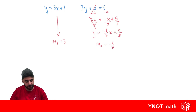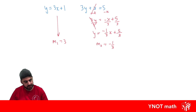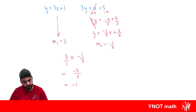From our earlier work we know they're going to be perpendicular, but let's double check. They're not parallel because the gradients aren't equal. And if they're going to be perpendicular, when we multiply them together we should get minus 1. So 3 times minus a third — think of 3 as 3 over 1. Times the numerators: 3 times minus 1 is minus 3; 1 times 3 is 3. And minus 3 divided by 3 is minus 1. So therefore these lines are perpendicular.